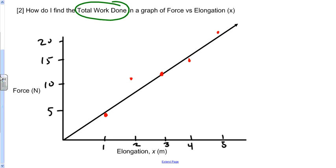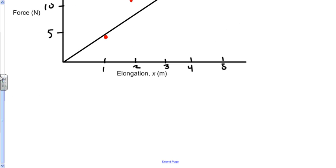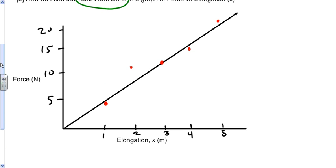So you guys will see here that I've made a graph of force versus elongation. The red dots, which I'll circle now, represent the points that I measured, and the black line is a line of best fit. So what I want to analyze is the spring constant and the total work done.